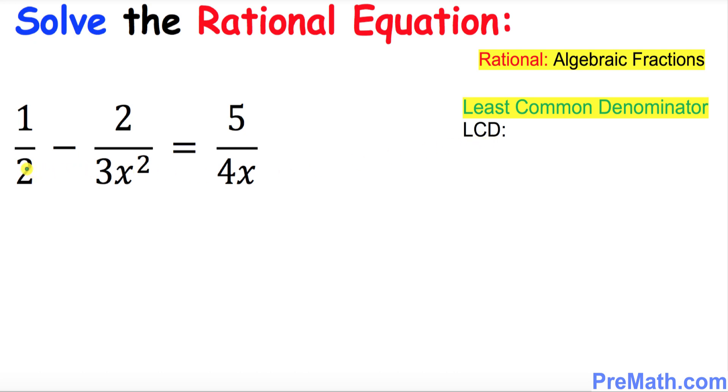Let's focus on these coefficients only, these numbers 2, 3, and 4. So the least common denominator among these three numbers is simply 12. Now let's focus on the variables which is x power 2 and simply x power 1. What is the highest degree of x over here? X power 2 is the highest.